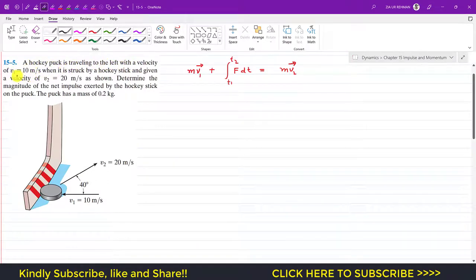That is the initial velocity in this direction. When it is struck by a hockey stick and given velocity of v2, that is 20 meters per second as shown, determine the magnitude of the net impulse exerted by the hockey stick on the puck. The puck has a mass of 0.2 kg.